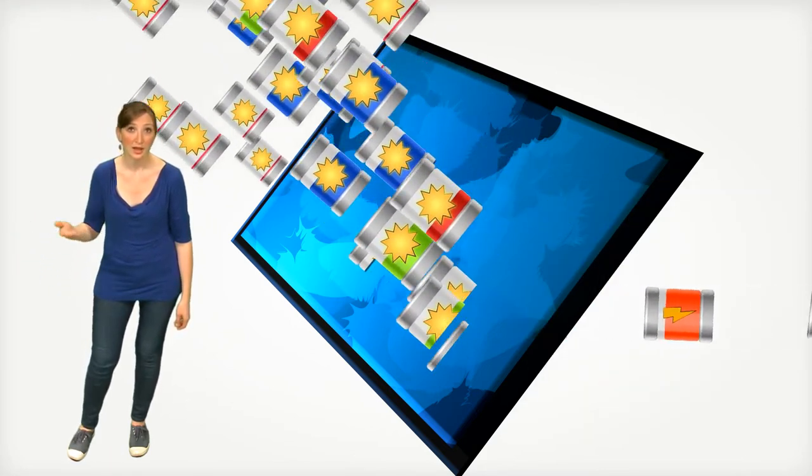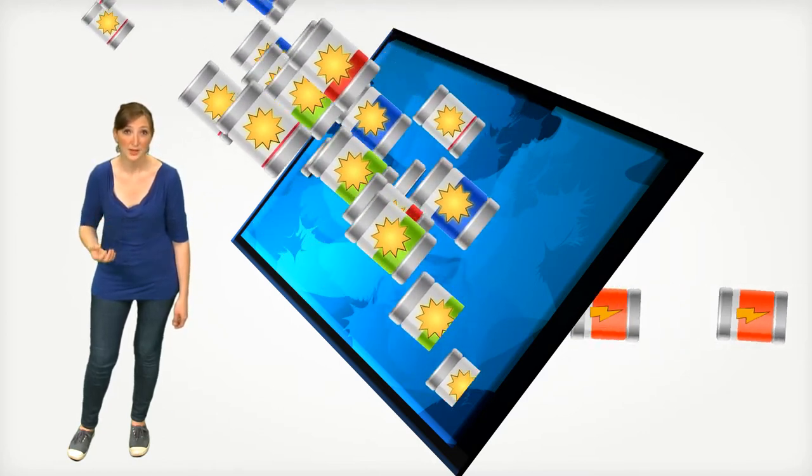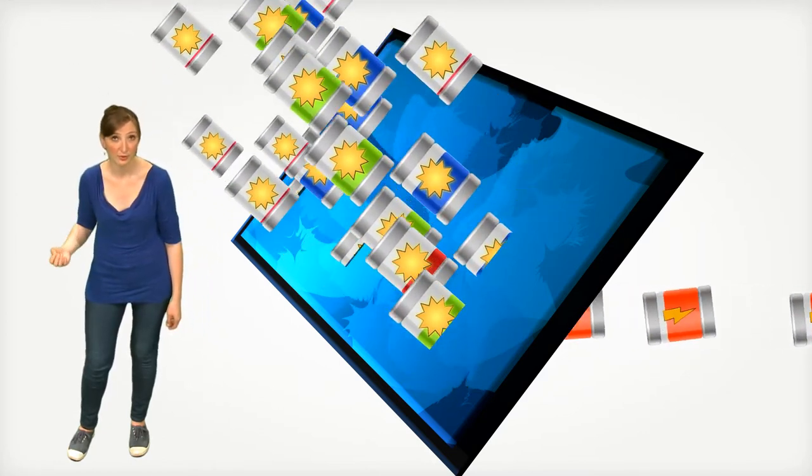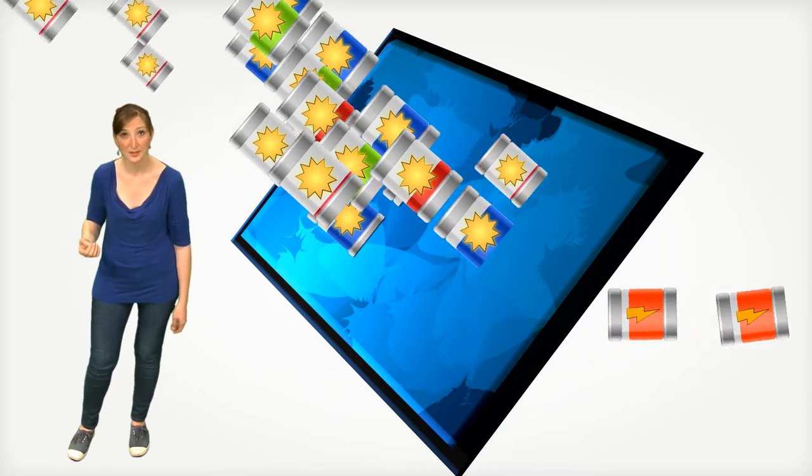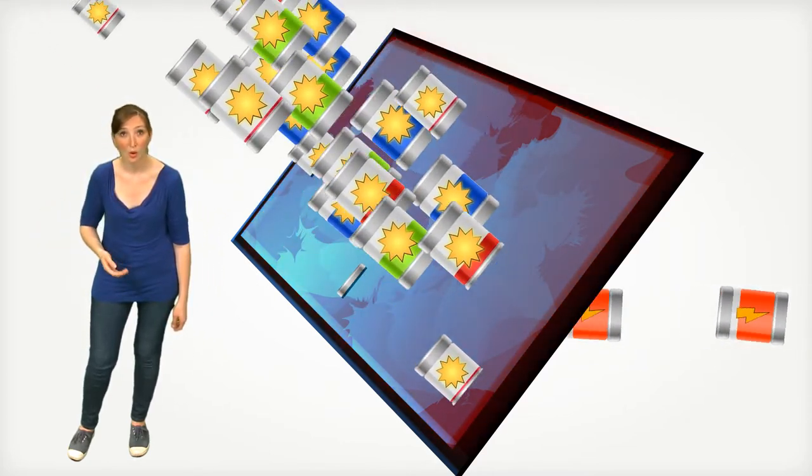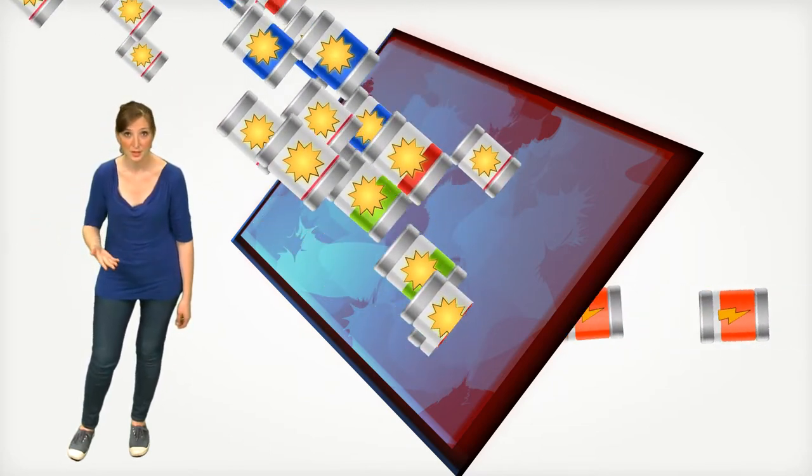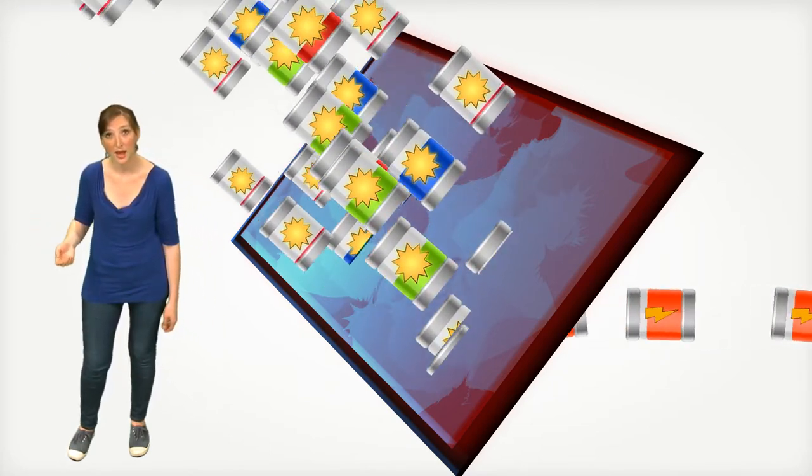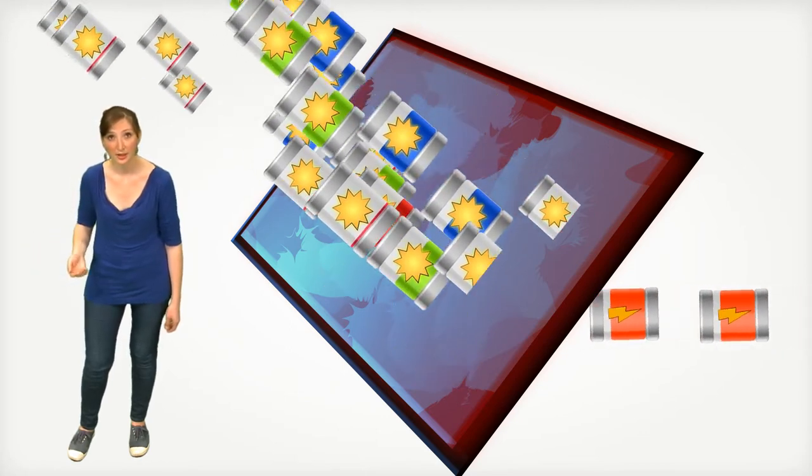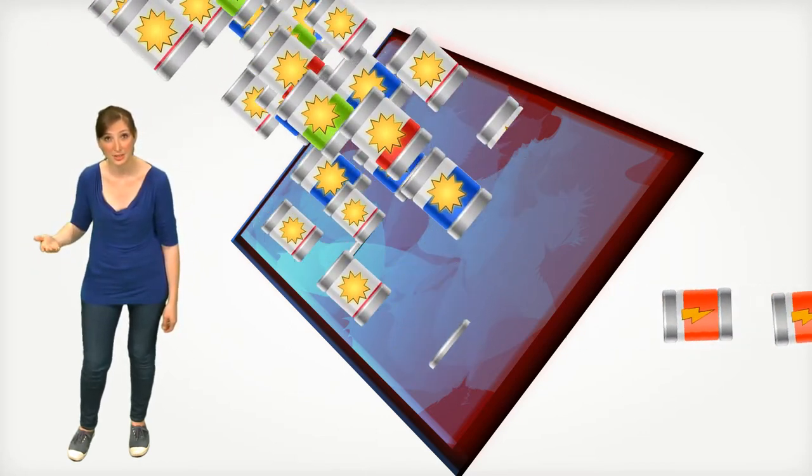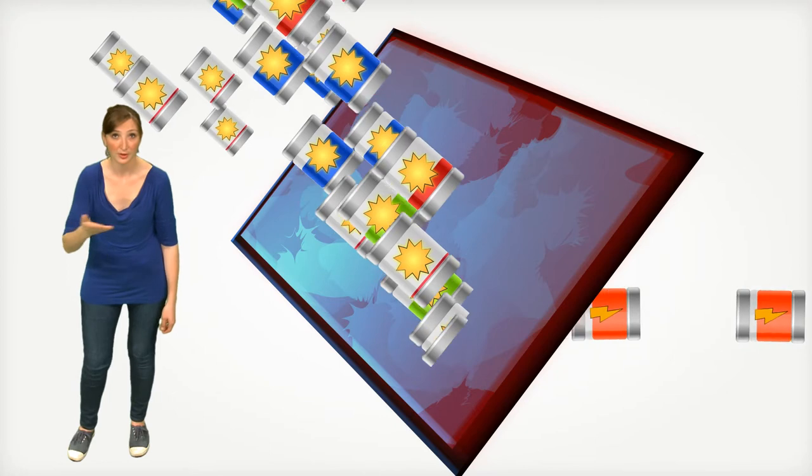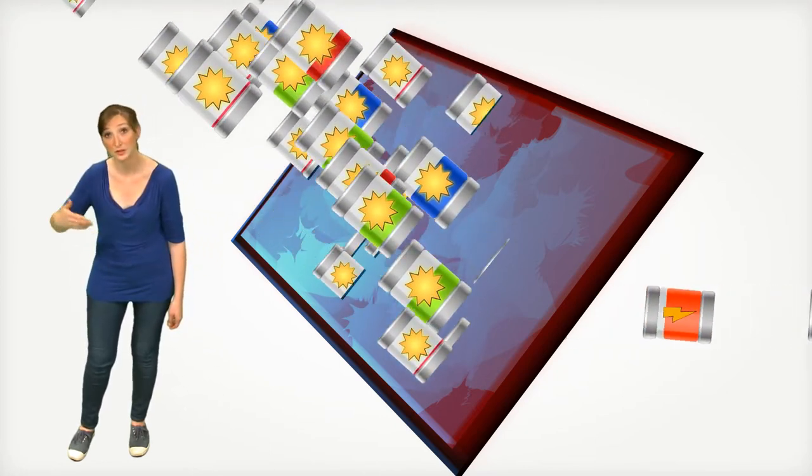Unfortunately, even though blue photons have twice as much energy as infrared photons, they produce exactly the same quantity of electricity. All the excess energy is transformed into heat. This is why silicon solar panels have a really low efficiency. A great part of the sunlight energy is simply transformed into heat instead of being transformed into electricity.